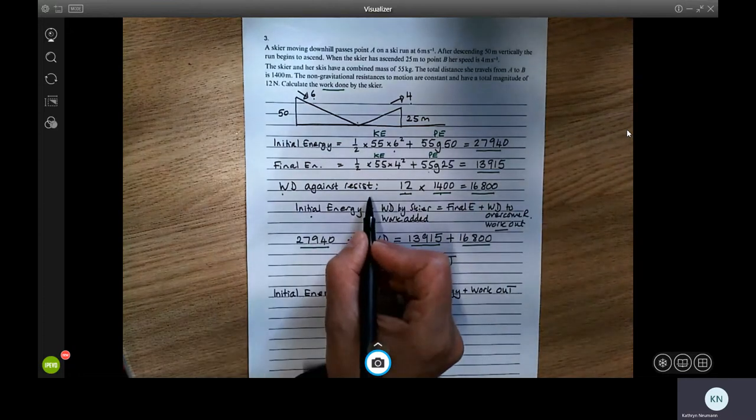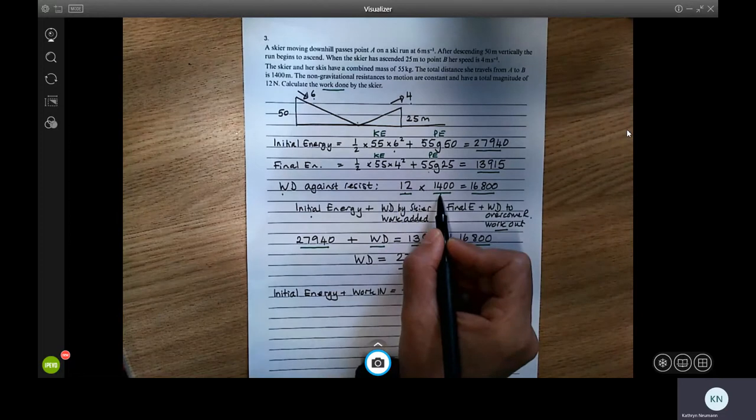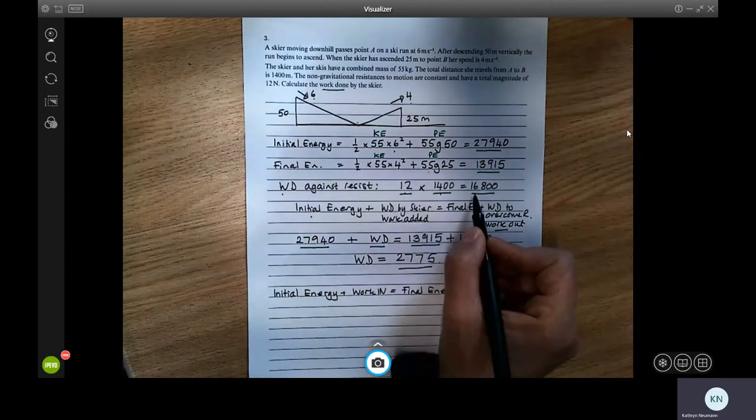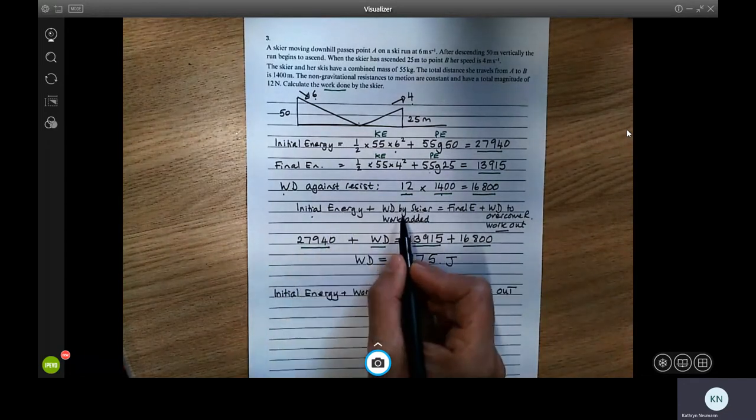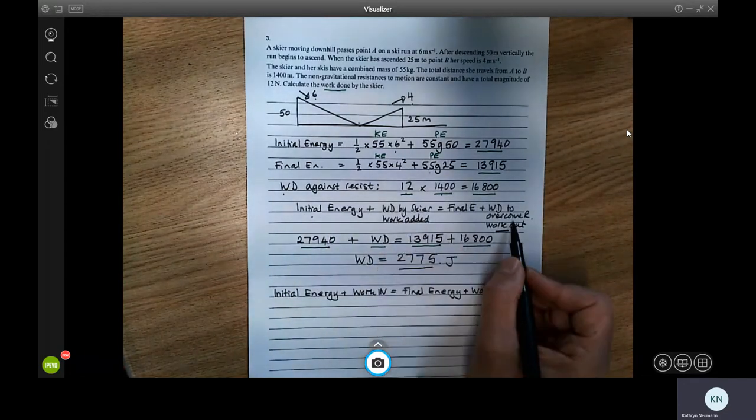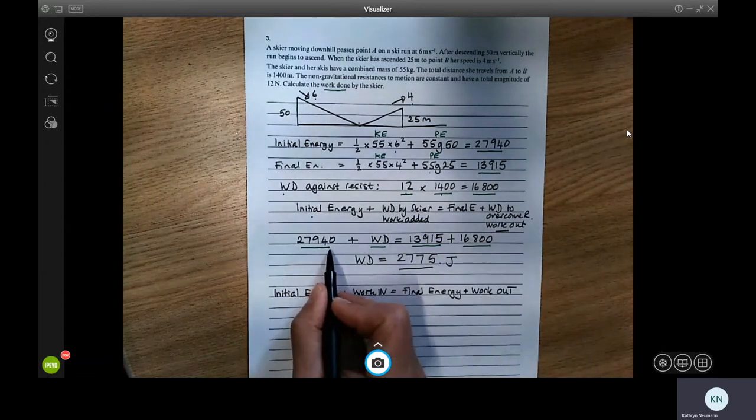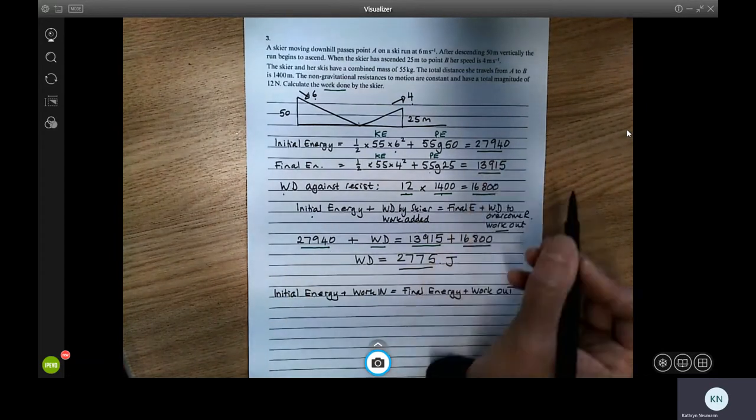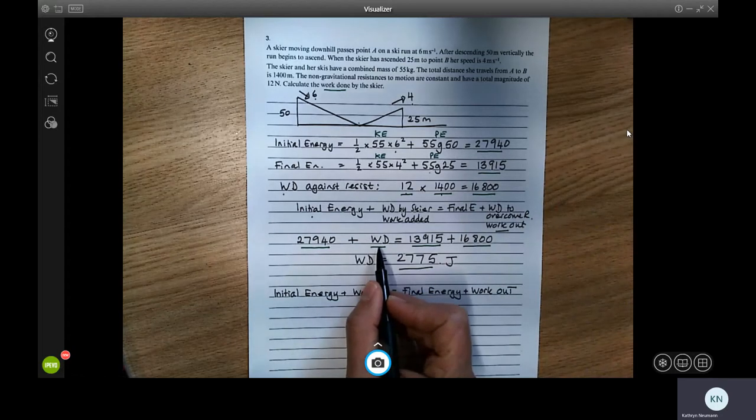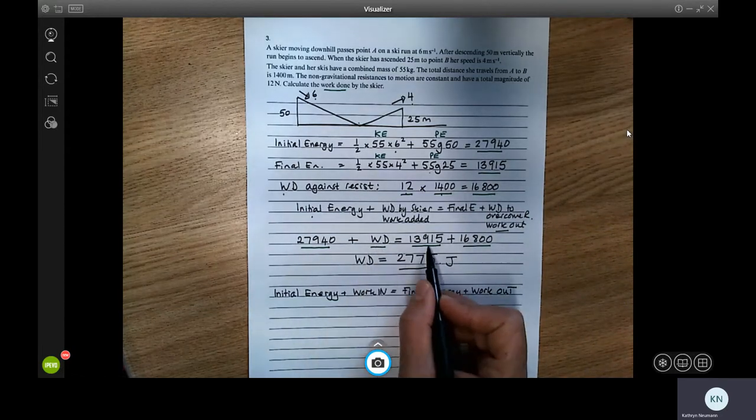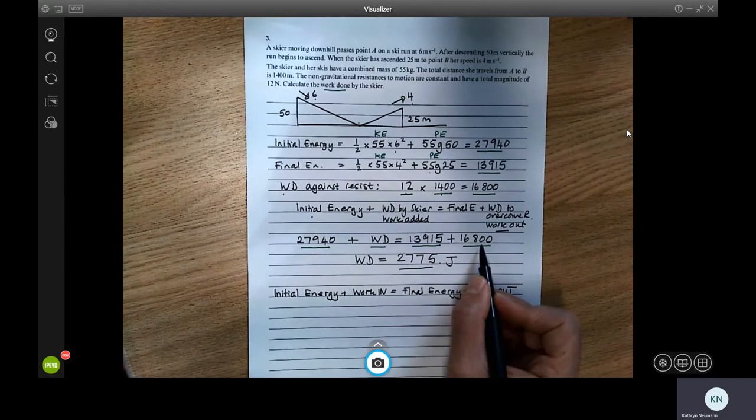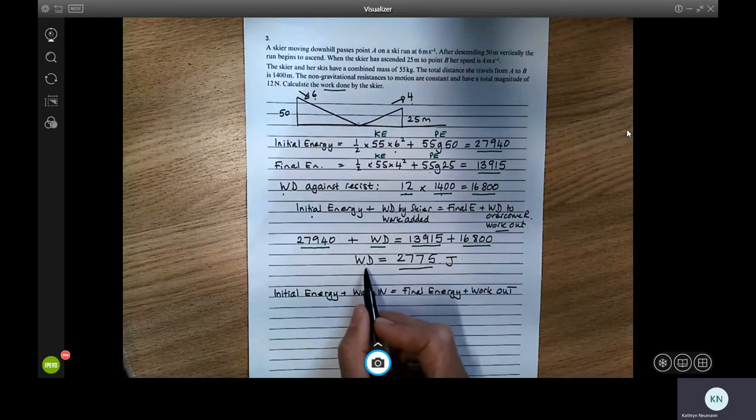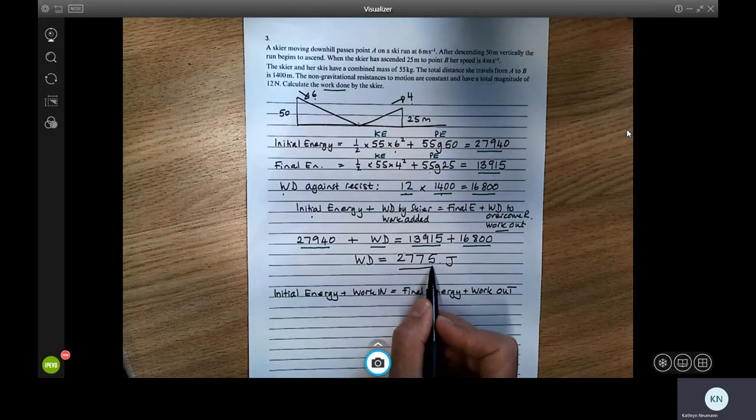The work that's been done against the resistance is 12 multiplied by 1400, which gives me 16,800. So here's my equation. Initial energy plus the work in is the final energy plus the work out. So this is the initial energy, KE plus PE. The skier puts some work in. We're trying to find out what that value is. That's equal to the final energy, 13,915, plus the work that's been done to overcome friction. And rearranging this, we get that the work done is 2,775 joules.